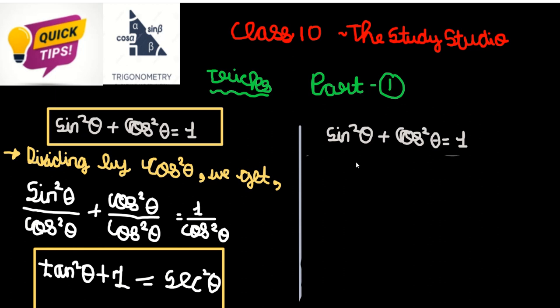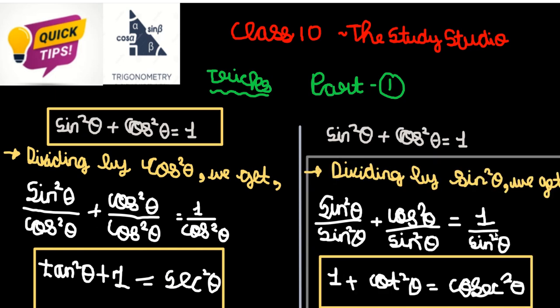Now, how to get the next identity? So, this is the same. Now, divide by sin square theta.